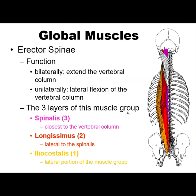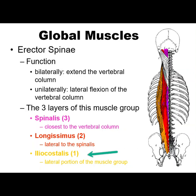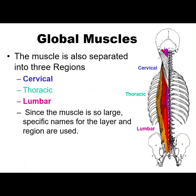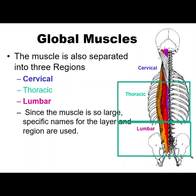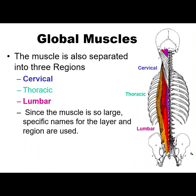There are three layers. You don't need to know attachments or innervations, but you need to know how to organize this muscle group. The spinalis, shown in pink, is closest to the vertebral column or to the spinous processes. The longissimus is lateral to the spinalis, shown in an orangish-red. And then the iliocostalis goes from the ilium of the os coxa — 'costalis' means ribs — so it is the lateral-most portion of this muscle group. The global muscles can also be separated into three regions.